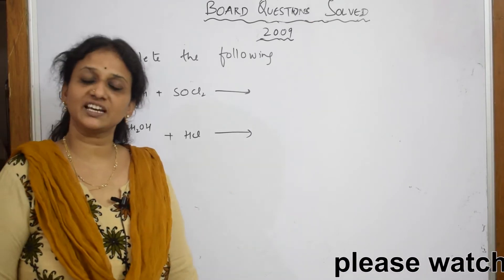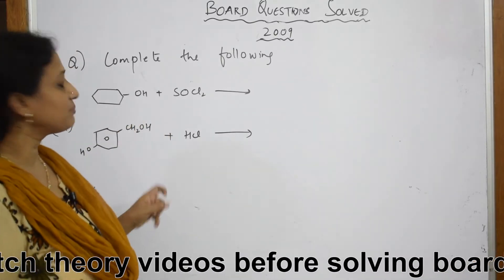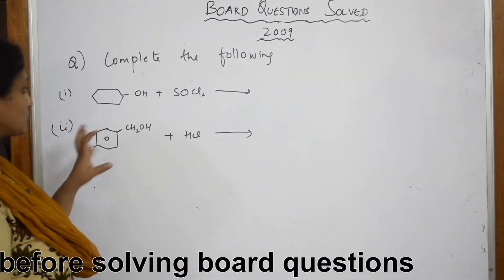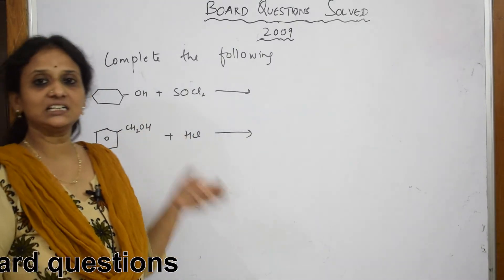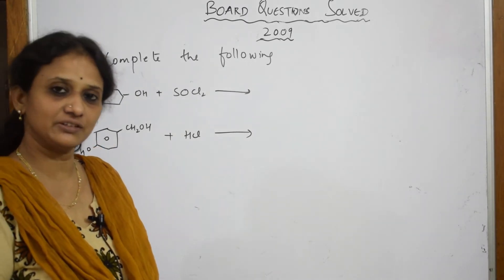Yes, so let us come back to 2009 paper now. We have already done the 2010 paper. So in 2009 paper, let us see the equation given to us. So what do they give? They have given this thionyl chloride, very famous thionyl chloride. We have been doing so many questions on thionyl chloride.